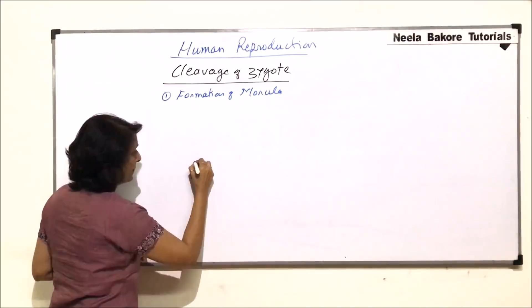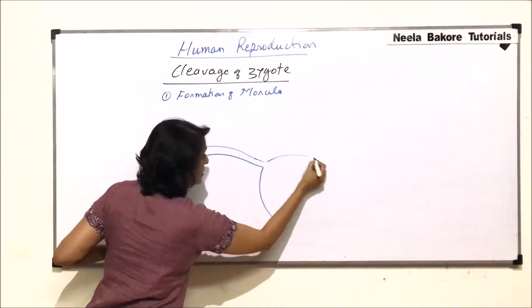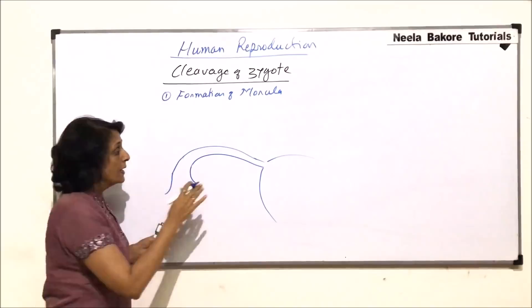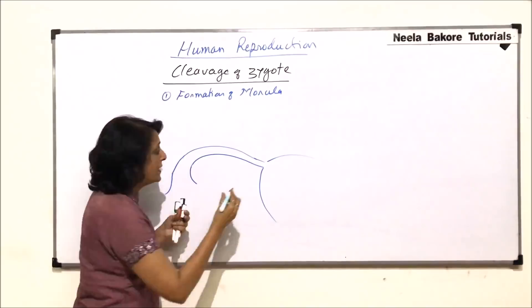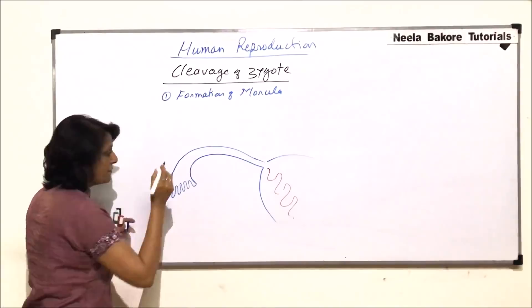This is the fallopian tube. This is the ampulla part, the infundibulum ampulla. And this is the tube which actually opens into the uterus. Because fertilization has taken place, the uterus is ready for implantation. And for implantation, the inner membrane, that is the endometrium, is highly folded. This opening is guided, or has many finger-like fimbriae.